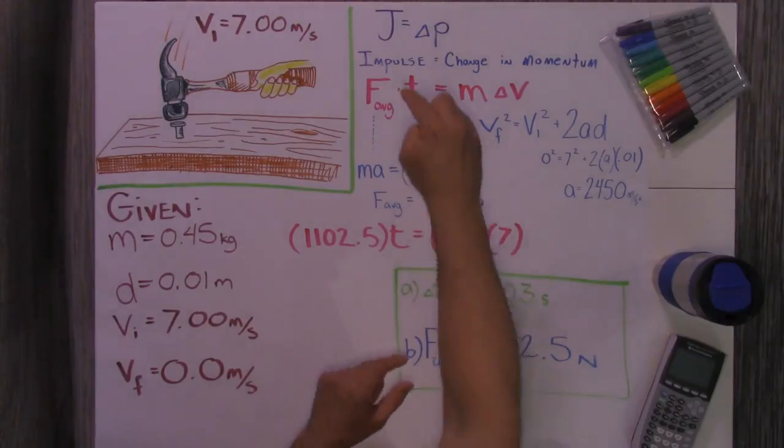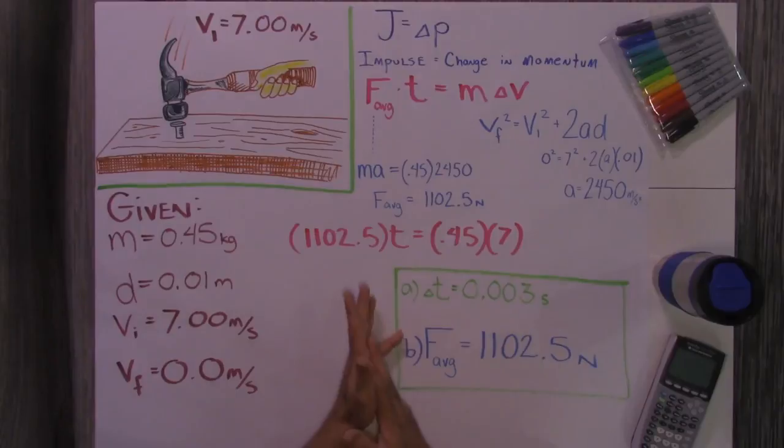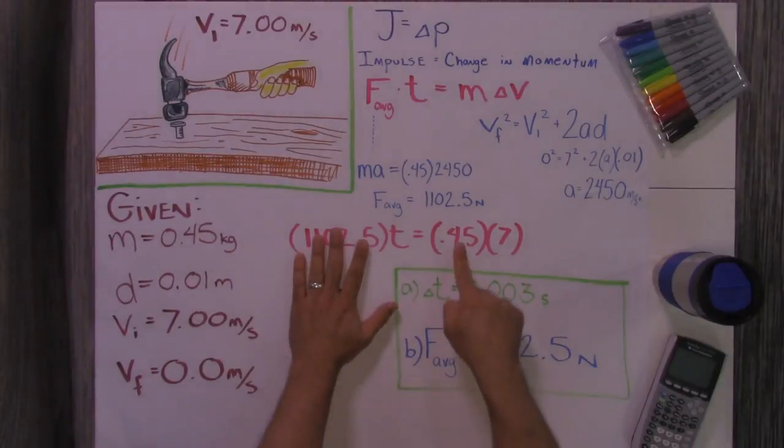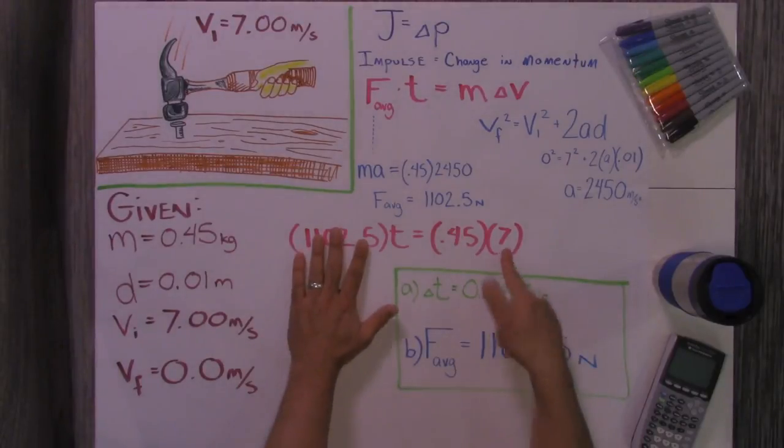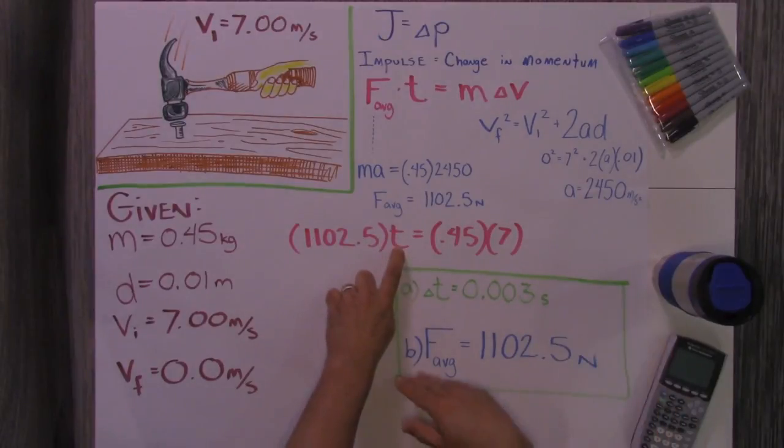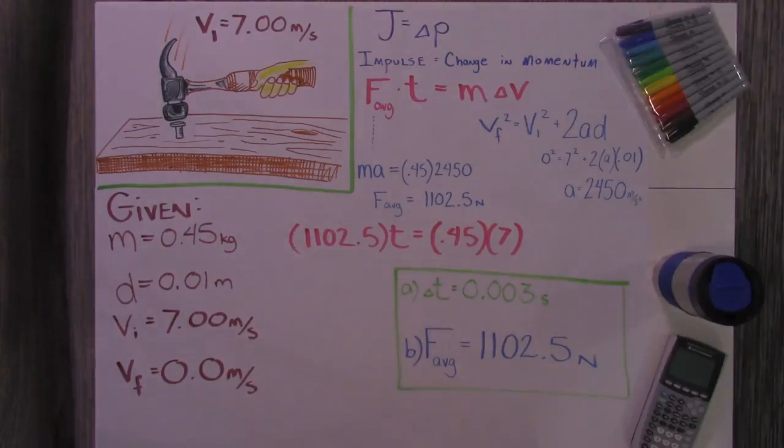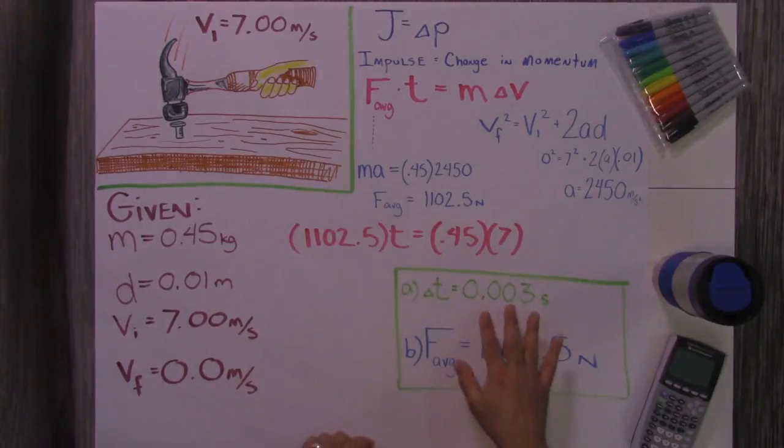Then, I put that back into the formula for the impulse momentum theorem. I know the force, I know the mass, I know how much the hammer changes its velocity. The only thing I didn't know was time. So, I took the mass times the change in velocity, divided by the average force, and I got a time of only three thousandths of a second.